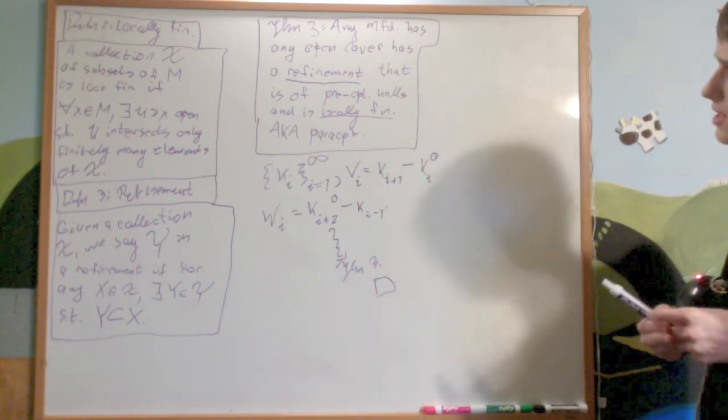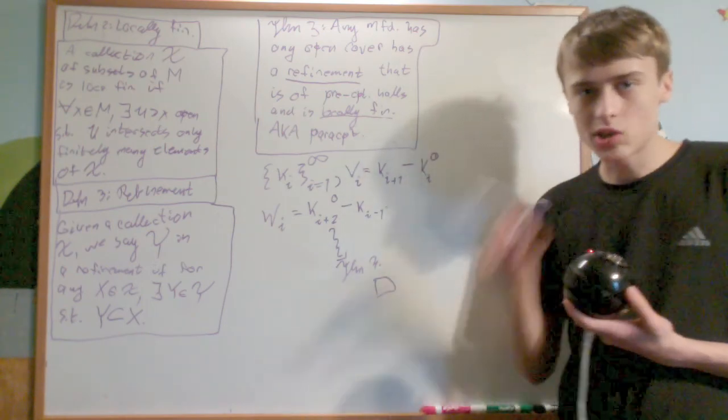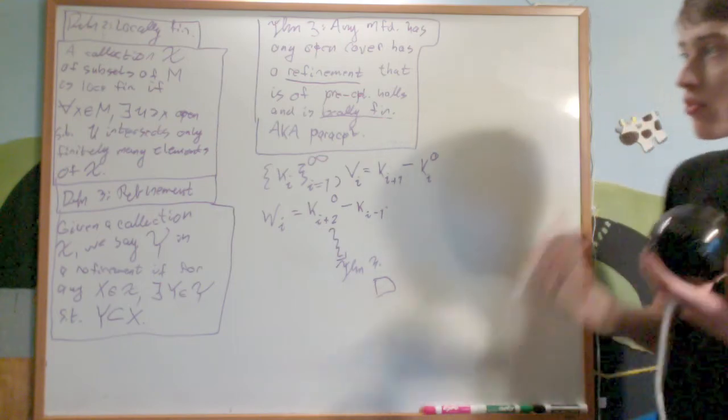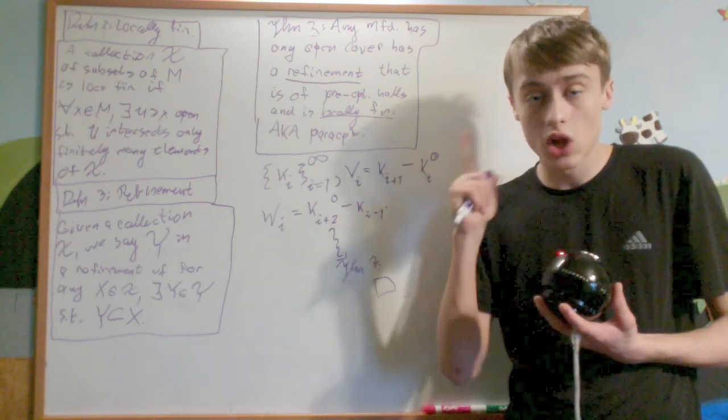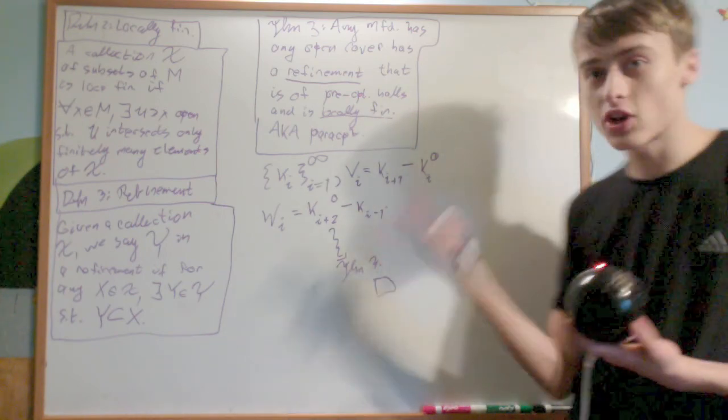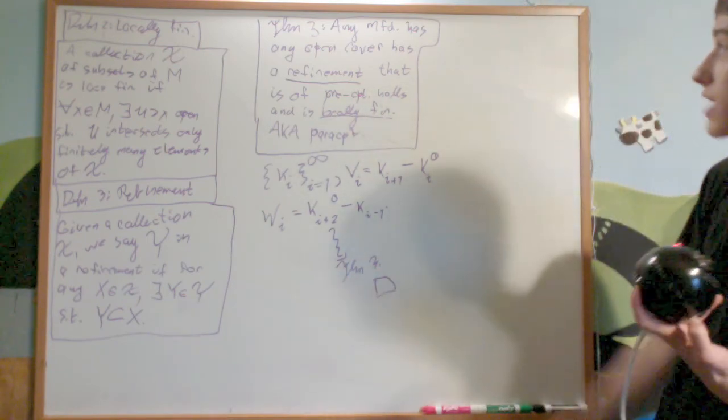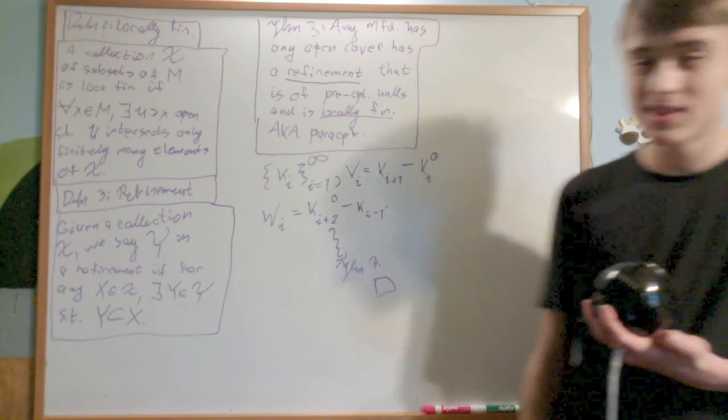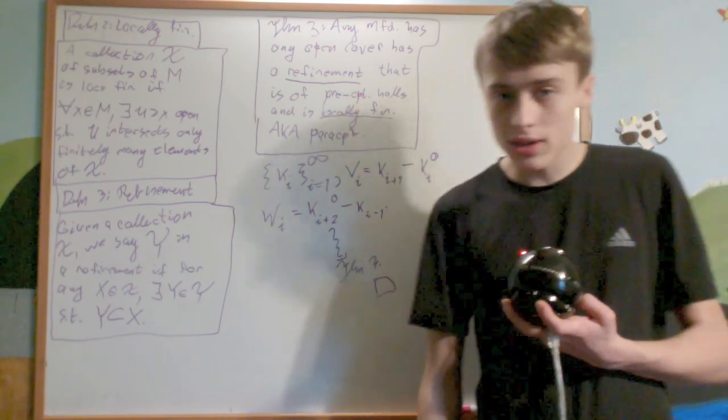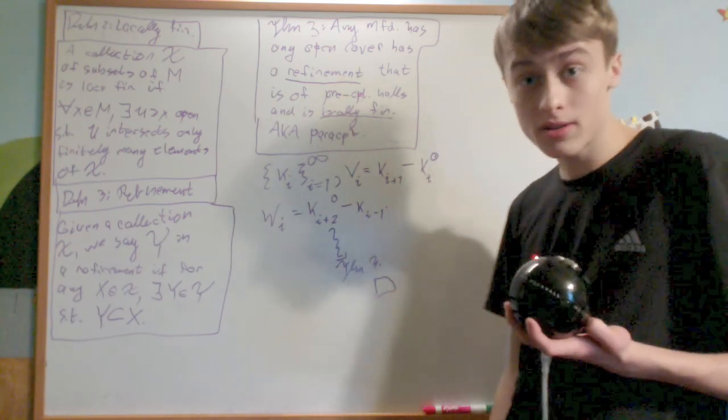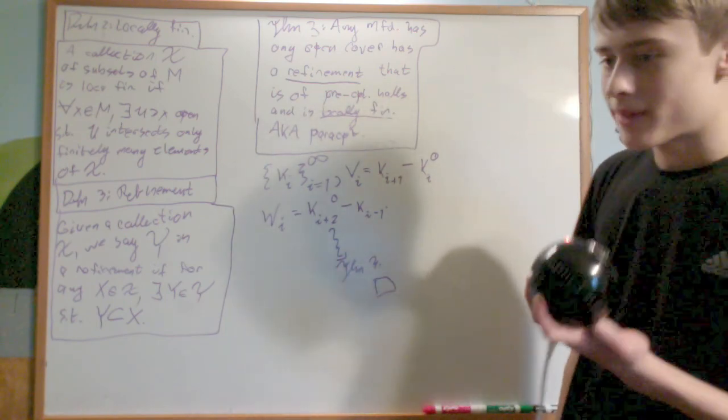So again, what this theorem says is that every manifold is paracompact, which is sort of like compactness except a little weaker. And before we proved that it has, that it was locally compact, now we've proven that it's paracompact, and we've proven that it has a basis of pre-compact balls. There's so many compact rules that go with manifolds. And so, we've also proven a lot about the connectedness of manifolds, namely that they're locally path connected, and that their path connected parts are equal to their connected parts. And so, that's it.